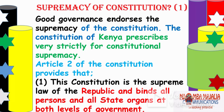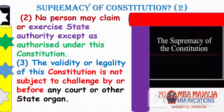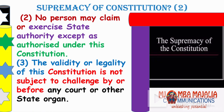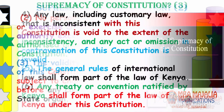Another aspect is the supremacy of the Constitution. Good governance endorses supremacy — nobody is above the Constitution, not even the president. Article 2 of the Constitution provides: the Constitution is the supreme law of the Republic and binds all persons, all state organs, and both levels of government. No person may claim state authority except as authorized under this Constitution. The validity or legality of this Constitution is not subject to challenge by any court or state organ.